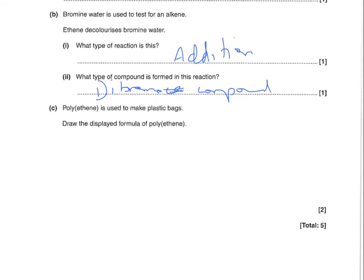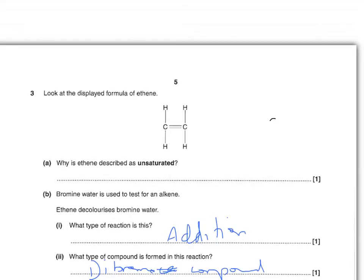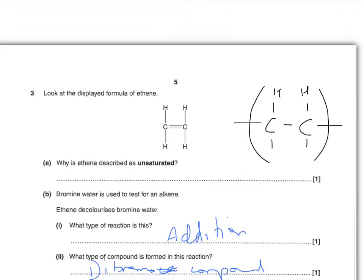Polyethene is used to make plastic bags. Draw a displayed formula of polyethene. To draw a displayed formula of a polymer, draw the two carbons that are in the monomer alkene but without the double bond — that double bond breaks and goes either side. Draw brackets around those, and then draw whatever's on the molecule to begin with, which is four H's. Then you need an n outside the bracket to get the second mark. Two marks for that.